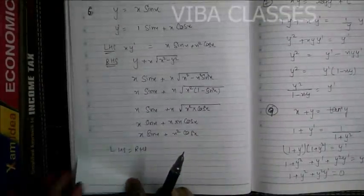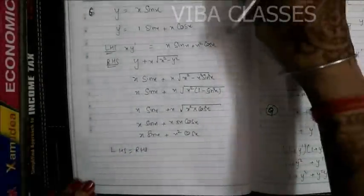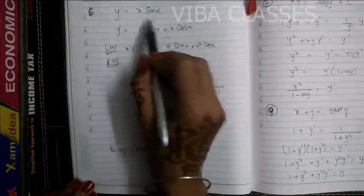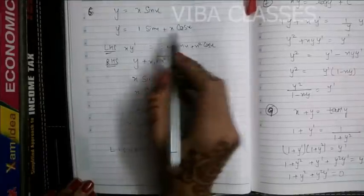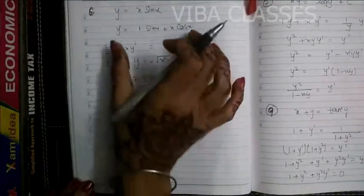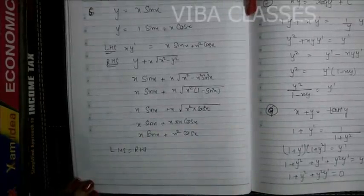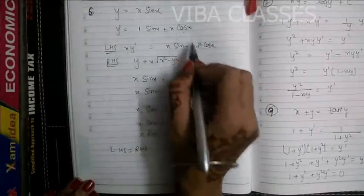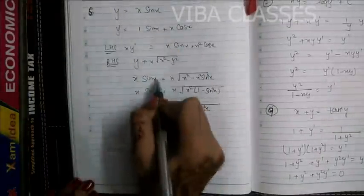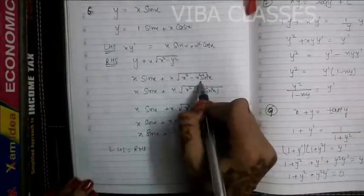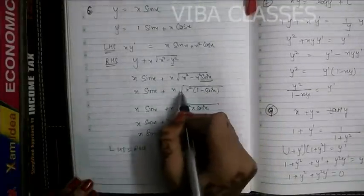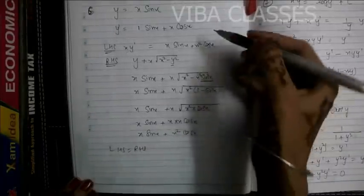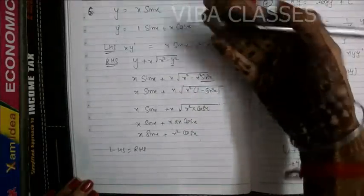Question number 5: y = x sin x. Take the derivative using the product rule: y' = sin x + x cos x. Picking the left hand side x·y' = x sin x + x² cos x. For the right hand side, substitute y = x sin x, and using x² common with 1 − sin²x = cos²x, taking it out of the root gives x cos x. These match, confirming this function satisfies the given differential equation.